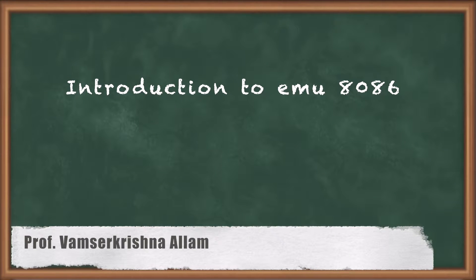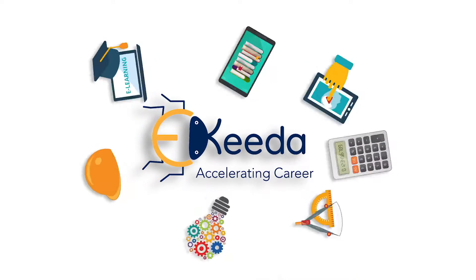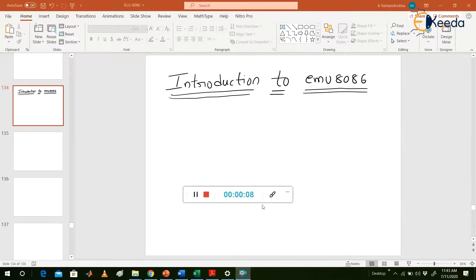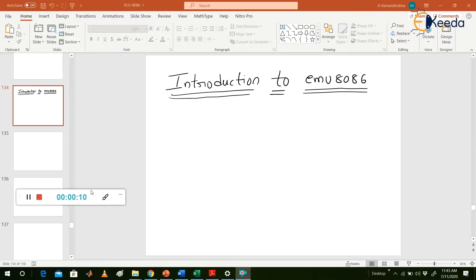Hi my dear students, today we will discuss about introduction to EMU 8086. This EMU 8086 is a tool used to execute our assembly language programs related to the 8086 microprocessor. Please pay attention — if you understand this software, then you can write any program and execute it with your own hands. First, we will open the EMU 8086 tool.